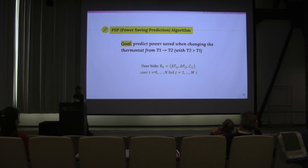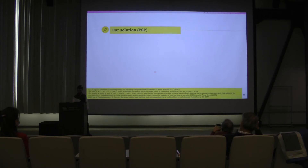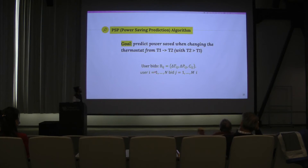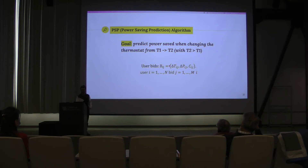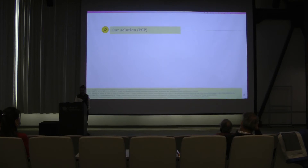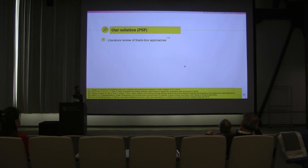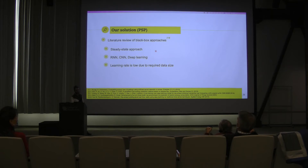Now let's talk about how we do the power saving predictions. The goal is to predict how much power is saved when a user changes the thermostat set point from temperature T1 to temperature T2. We investigated the literature of machine learning and deep learning approaches for power consumption, and what we find is that most of them are steady-state approaches — basically, there are no studies where the thermostat setting is changed in the dataset. We find that the best performing algorithms are deep neural networks, but the consequence of using such a heavy model is that they require big datasets.